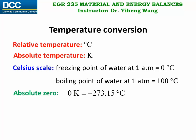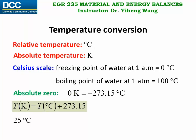Because the absolute temperature and relative temperature use the same scale, when converting between them there is no multiplication factor involved, unlike the examples we worked on previously. We only need to do addition or subtraction. The temperature in Kelvin equals the temperature in degree Celsius plus 273.15. For example, for a temperature of 25 degrees Celsius, if we want to convert it into Kelvin, we take 25 plus 273.15, which equals 298.15 Kelvin.